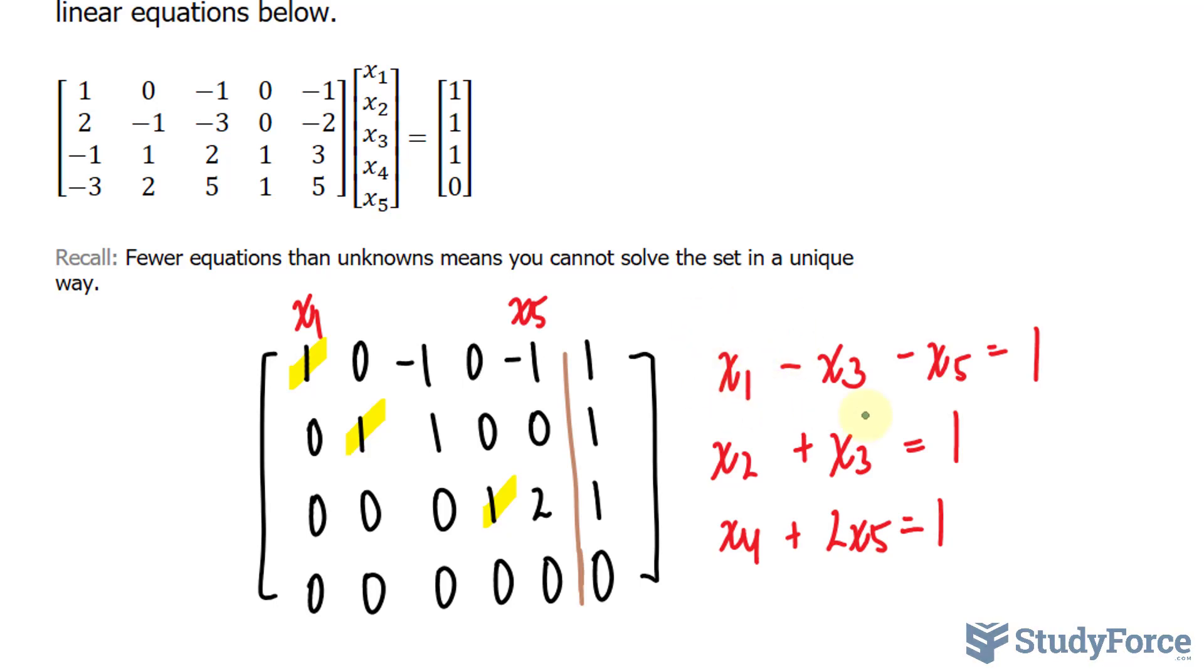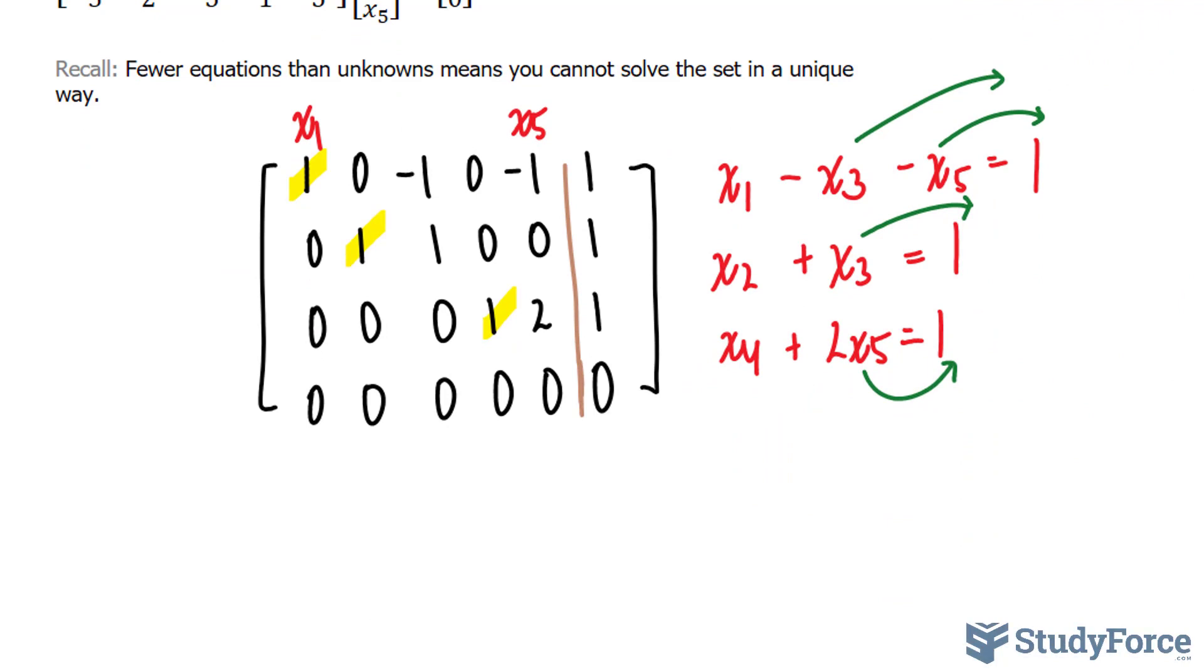So in this equation, we had a leading one on x sub one. So I'll solve it where I have x sub one is equal to everything on the other side. And with that said, I'll move this over and that over. For this equation, I will move x sub three over. And for this equation, I'll move that over.